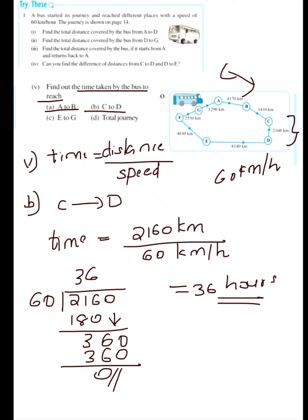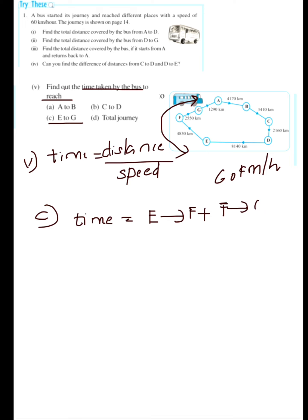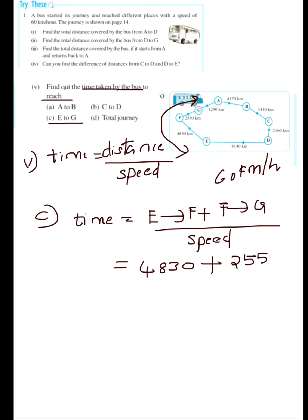Now let's see part C: find the time taken by the bus to reach from E to G. The total distance from E to G means E to F plus F to G, all divided by the speed of 60 km per hour.